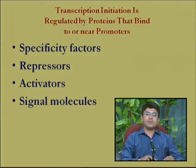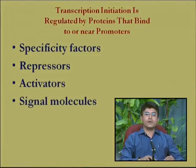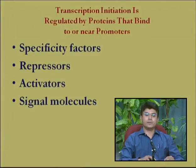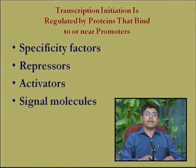If sigma 70 is replaced by sigma 32, the RNA polymerase will be guided to genes whose promoters are recognized by sigma 32. Repressors are proteins that exert negative control by binding to the operator site found in the promoter region. Activators are proteins that bind at or near the promoter and enhance RNA polymerase-promoter interaction, thereby activating transcription. Certain signal molecules, such as catabolites, bind to repressors or activators and change their activity, exerting regulatory control at the transcription level.